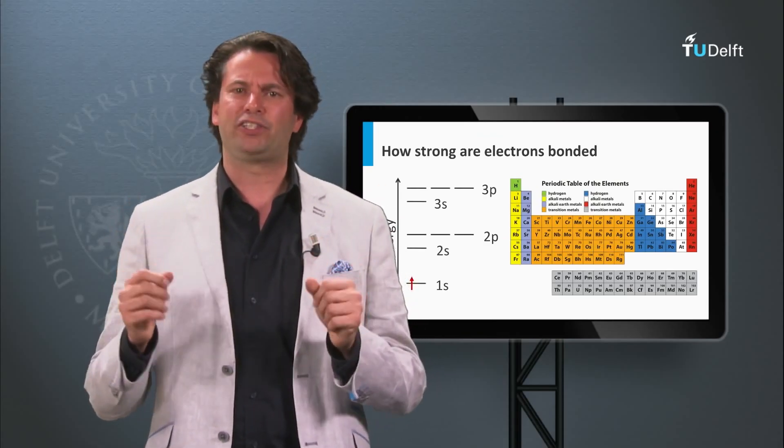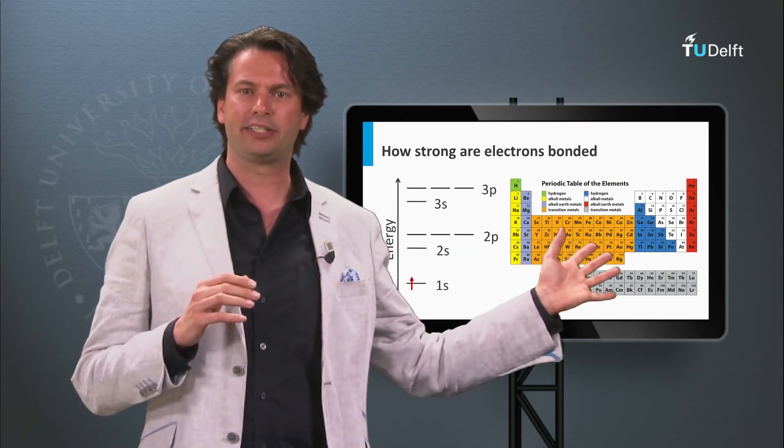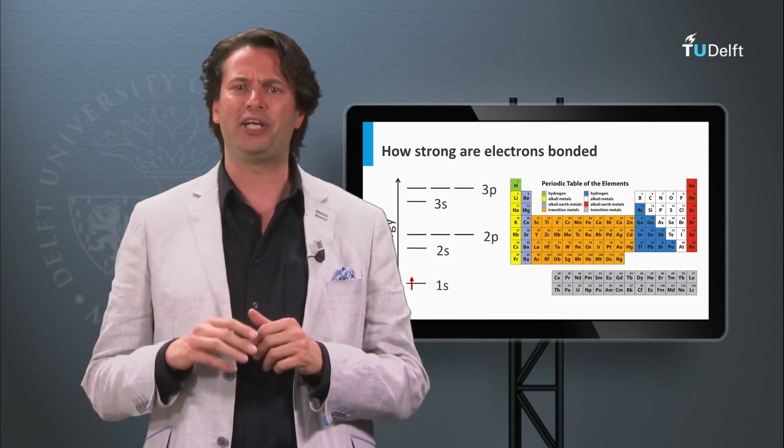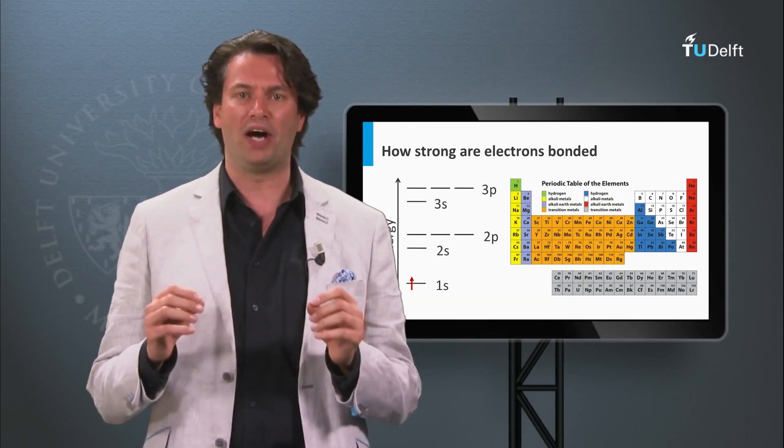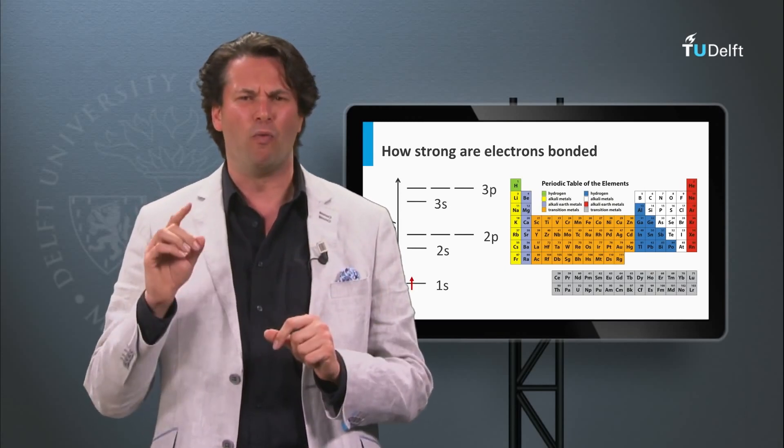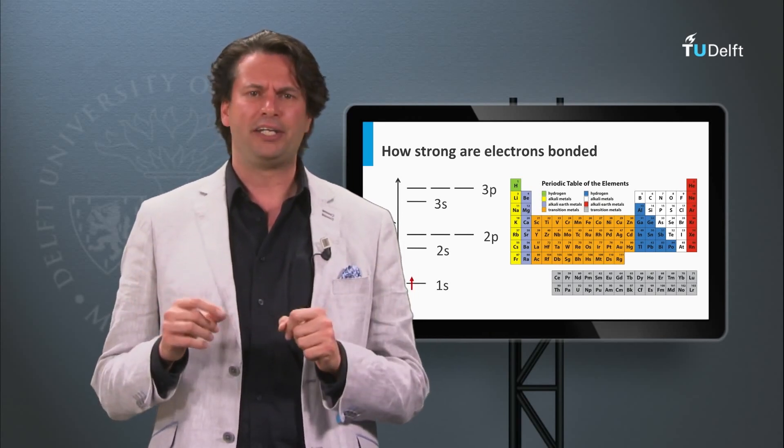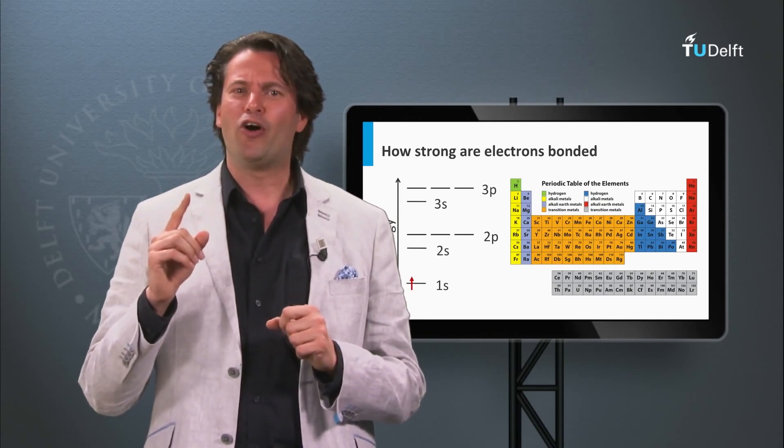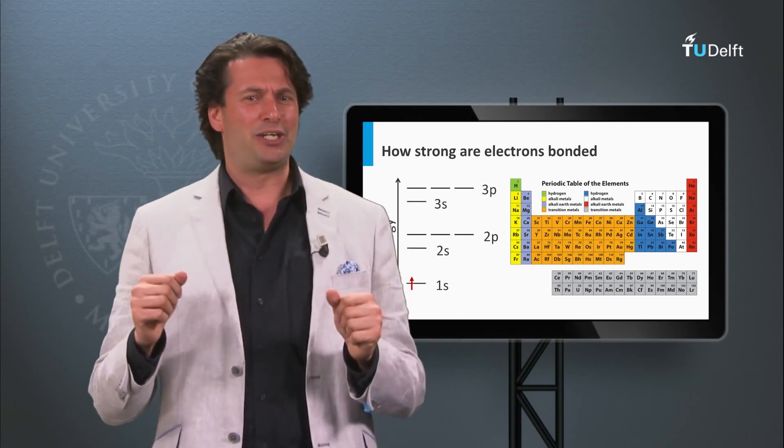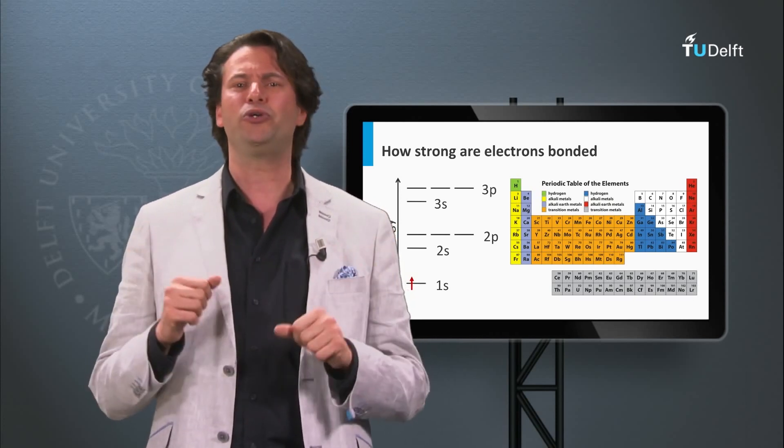These discrete energy levels can help you understand how the periodic table of elements is built up. Before we do that, we have to discuss one important additional property of the electron and one important law of quantum mechanics. The important property of the electron is that electrons can have spins. The important law in quantum mechanics is the Pauli exclusion principle.